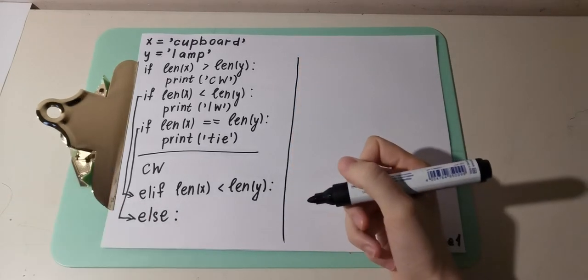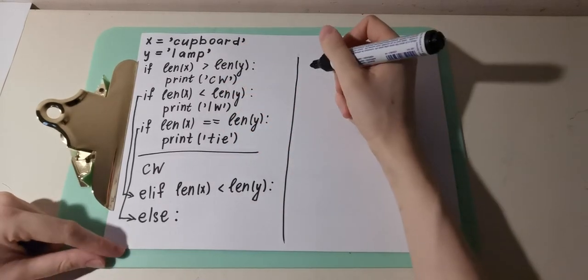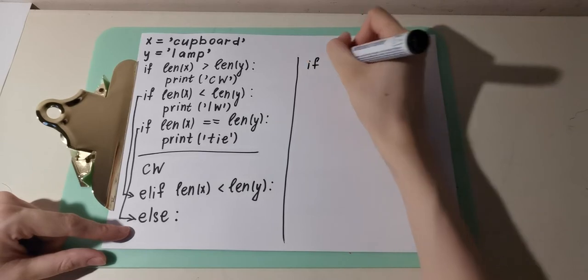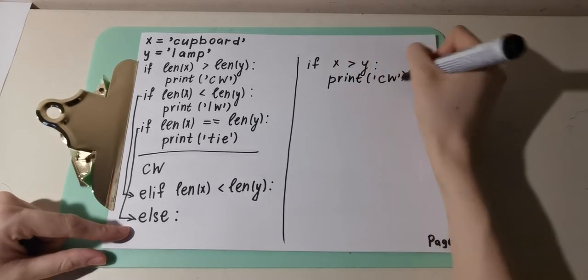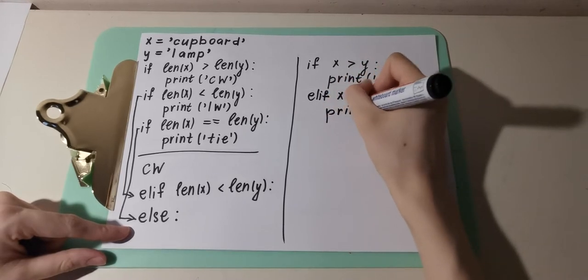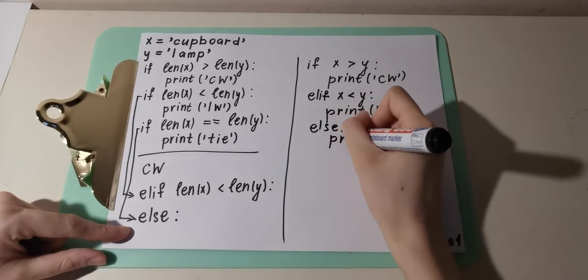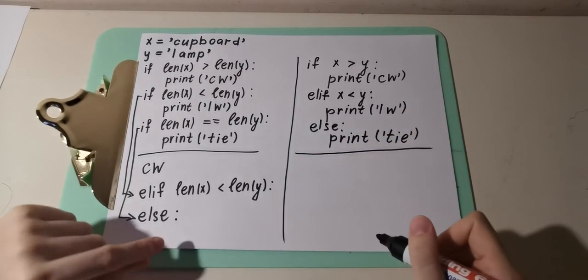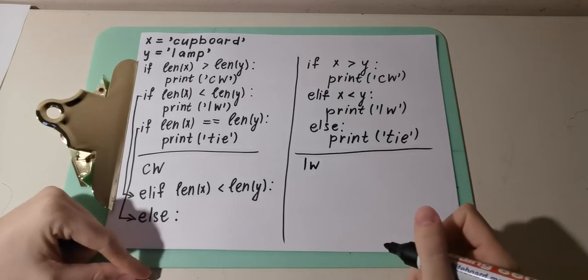But what do you think — is there another way to compare these two strings without our len function? Let's write the improved code with elif and else, but we quit the len function. So: if x greater than y, print 'cardboard 1'; elif x less than y, print 'lamp 1'; and else print 'tie'. Let's run the code. And our output is 'lamp 1'.